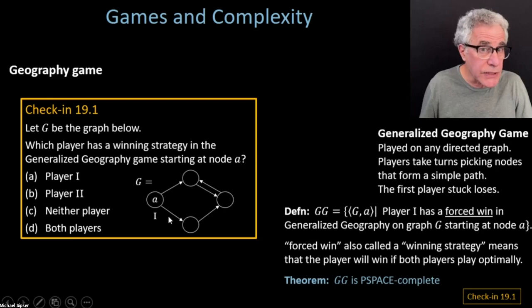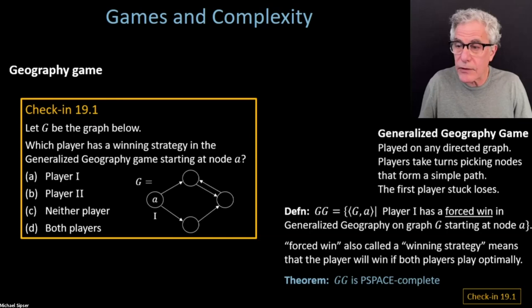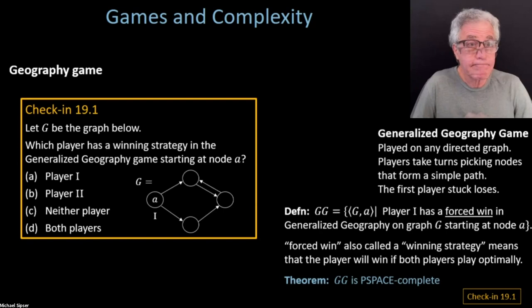I'm going to give you a very small example of a generalized geography game, and you have to figure out whether it's player one or player two that has the forced win, the winning strategy — or maybe neither or both. Those are the four options. Player one has to play at the designated starting place, and then it's up to player two to continue.